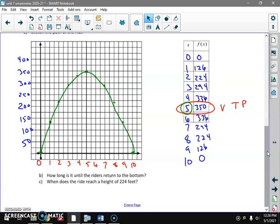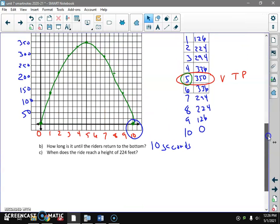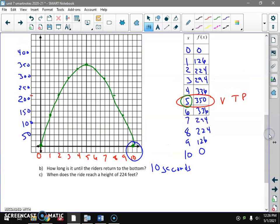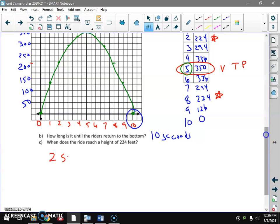Let's answer first. How long is it until the rider returns to the bottom? That would be right here, 10 seconds. When does the rider reach 224 feet? So let's go up to 224, somewhere around here. Now I could look across at the graph, or I could look for 224 in the Y column. Here and here. Why two times? Because once on the way up and once on the way down. So when did I reach 224 feet? After two seconds and eight seconds.